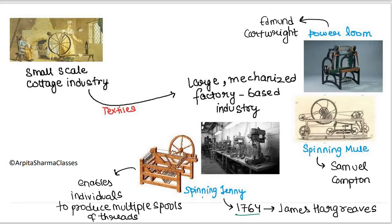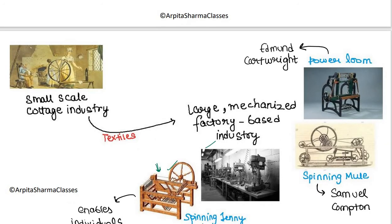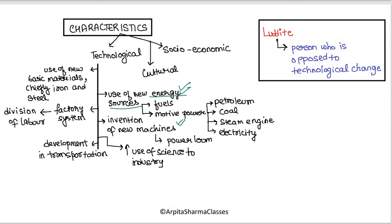Employment opportunities were created because these machines needed people to operate them. Quality of life eased as machines took over manual labor. The Industrial Revolution led to the use of new energy sources like petrol, coal, electricity, and steam engines. New machines were invented — for example, power looms, spinning mules, and spinning jenny. The use of science increased in industry. New materials like iron and steel were used, factory systems became mechanized, employment opportunities increased, and transportation became more efficient.